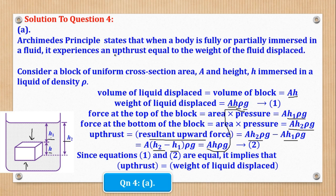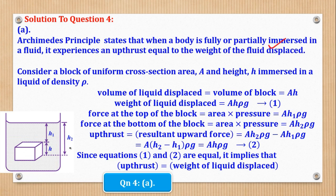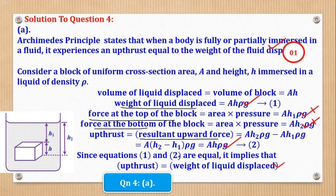Comparing these two results, we conclude that since equations 1 and 2 are equal, upthrust equals the weight of the liquid displaced — which is in line with Archimedes' Principle. We have illustrated Archimedes' Principle. For marks: stating the principle is one mark; illustrating earns four marks — one mark for weight of liquid displaced, half a mark each for force at top and bottom, one mark for resultant upward force, and one mark for equating the two.